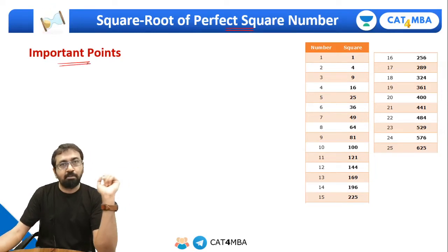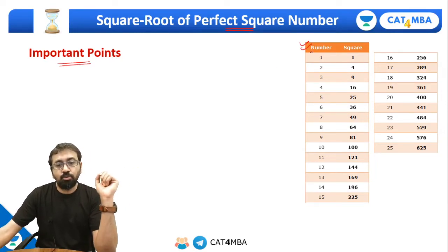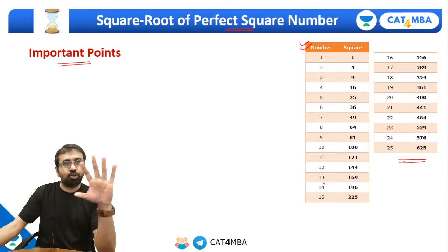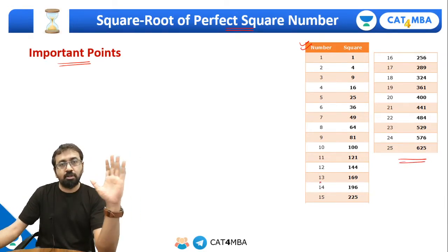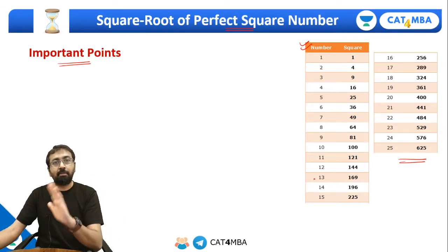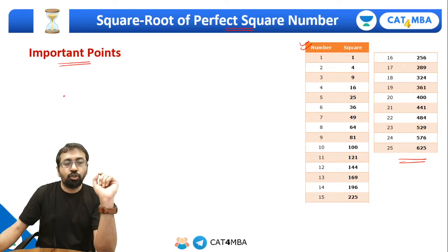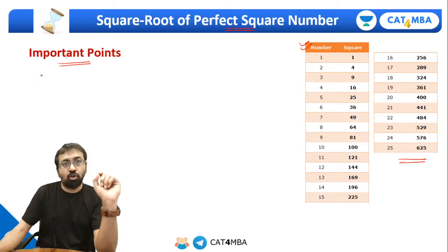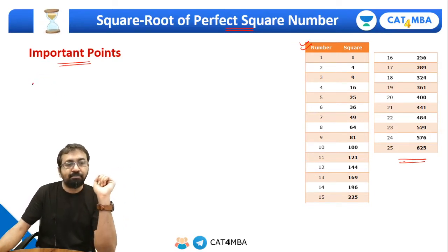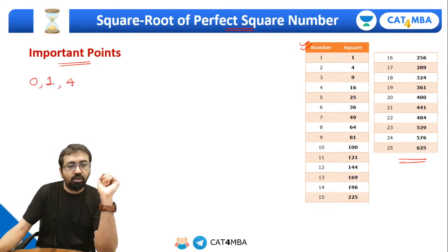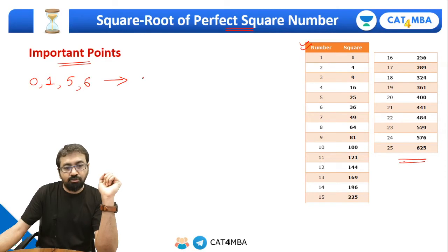We need to remember certain important points. The first thing is you will have to remember squares of numbers up to 25. Most students remember squares up to 20, but I suggest you go for an extra mile and remember till 25. Then you will have to remember last digits of the squares of the first nine digits. For numbers ending in 0, 1, 5, or 6, the last digit of their square will remain the same — 0, 1, 5, 6.